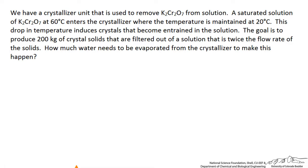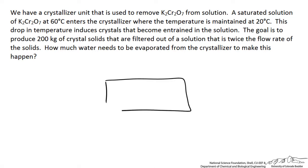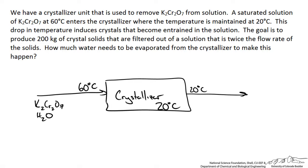A saturated solution of potassium dichromate at 60 degrees Celsius enters the crystallizer where the temperature is maintained at 20 degrees Celsius.